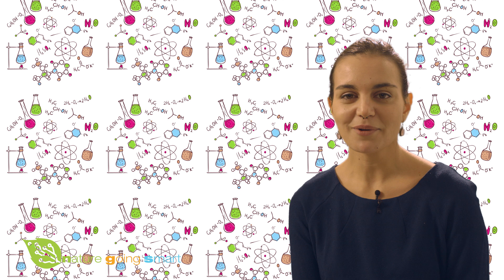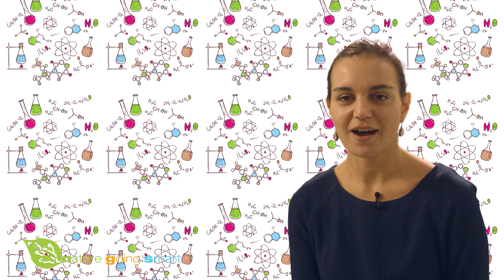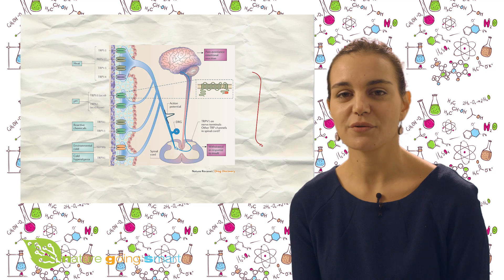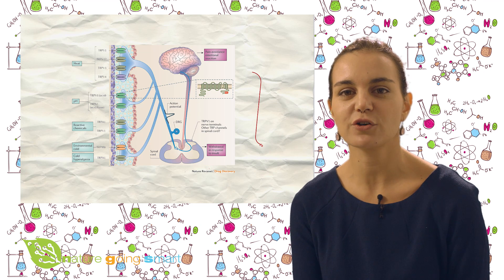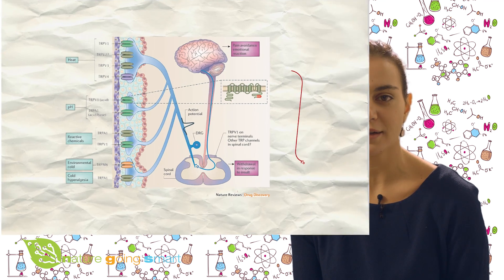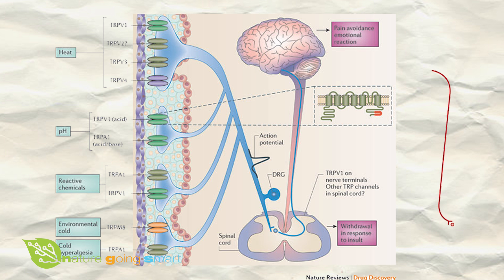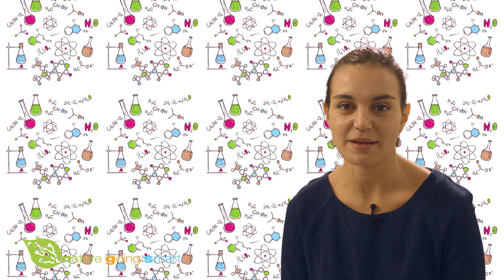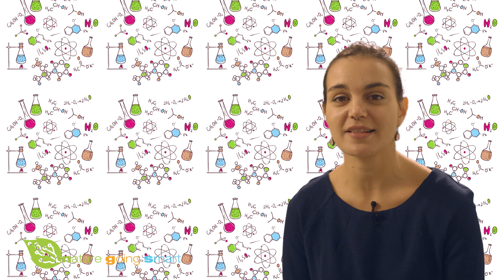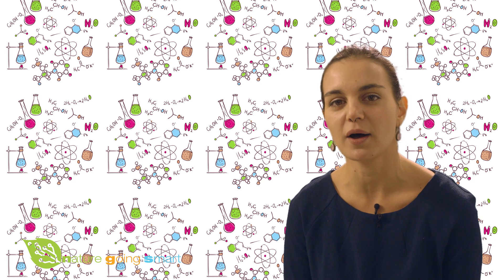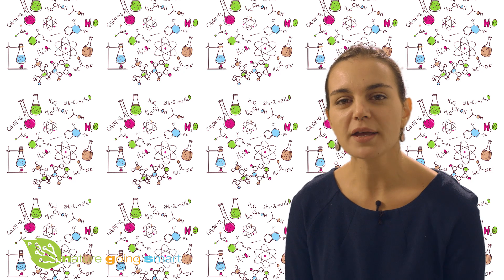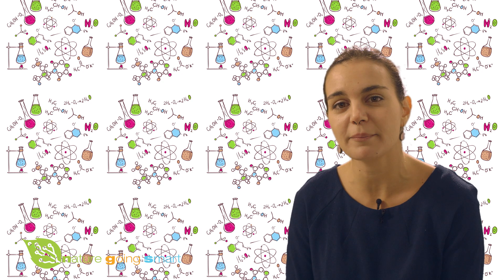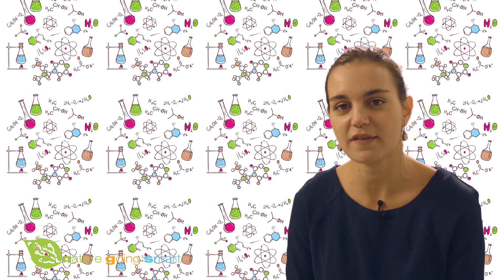The primary actions of THCA are mediated through receptors devoted to the control of pain, inflammation and temperature, such as TRPA1 and TRPM8. Once THCA has been absorbed in the system, it activates a receptor called TRPA1. TRPA1 is responsible for immune and analgesic response.